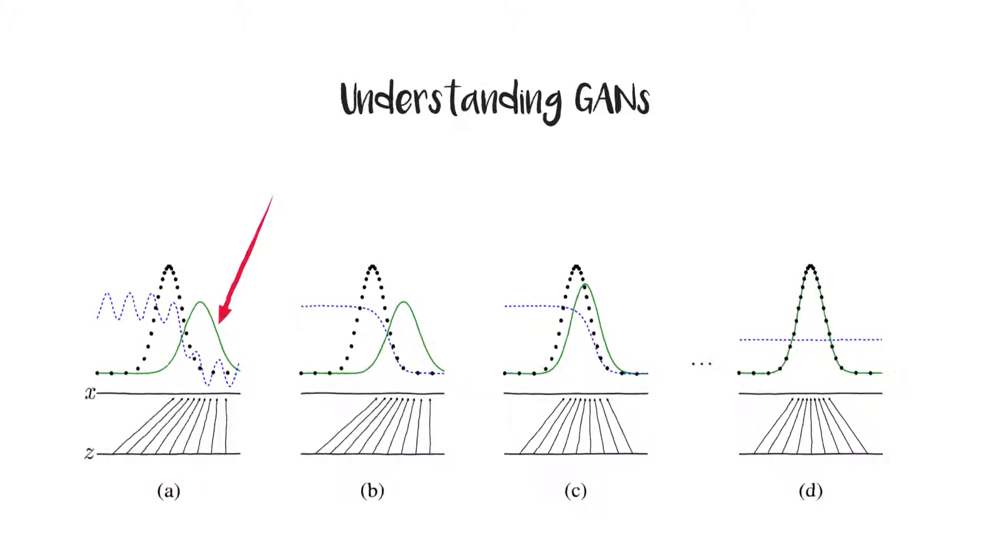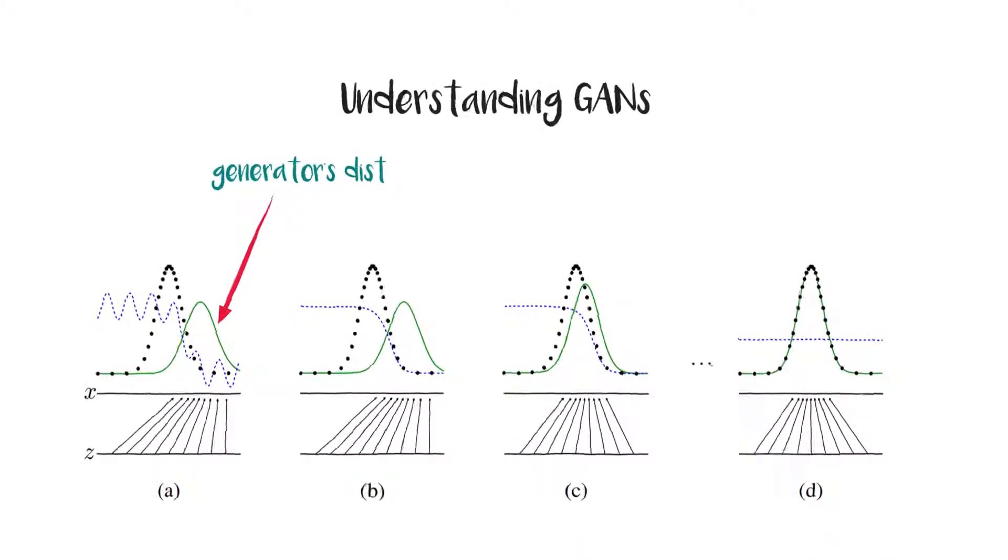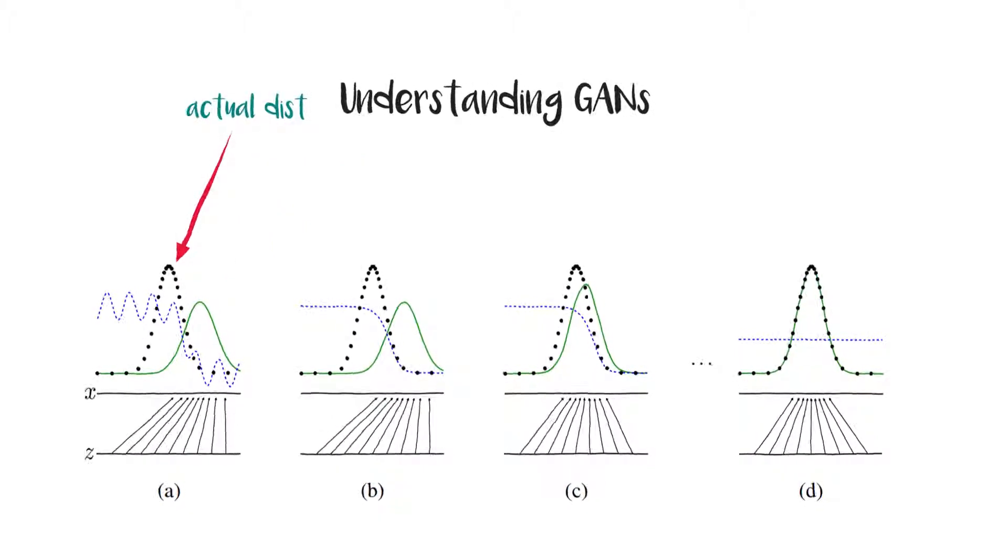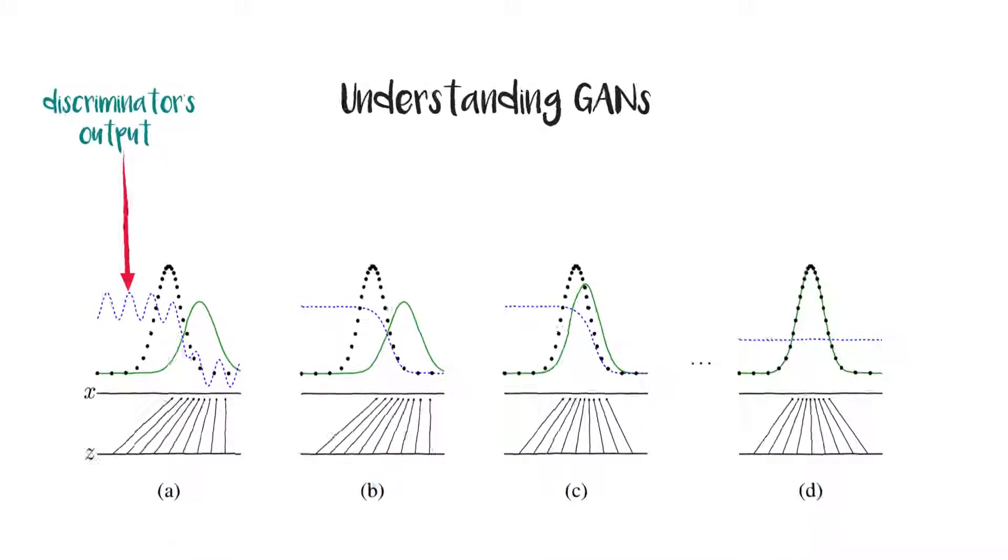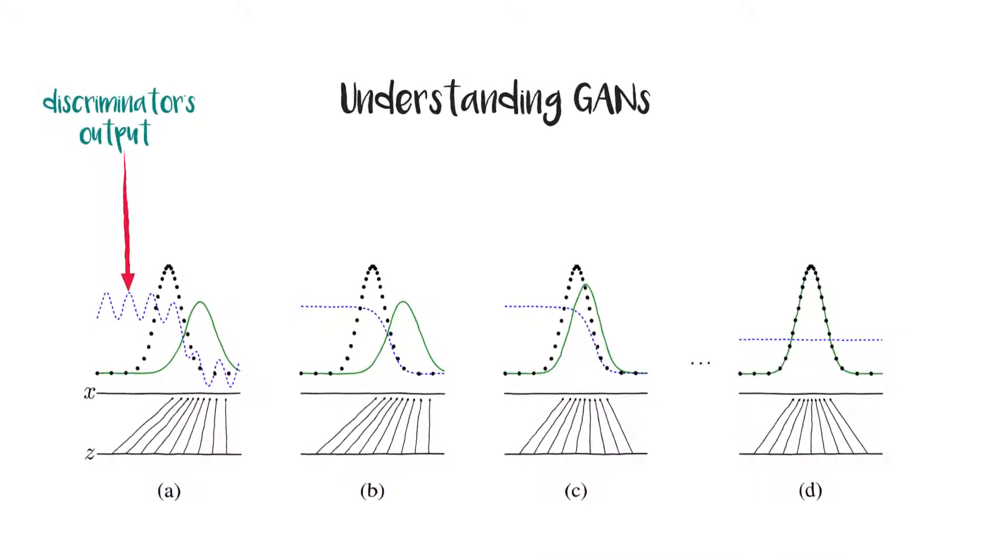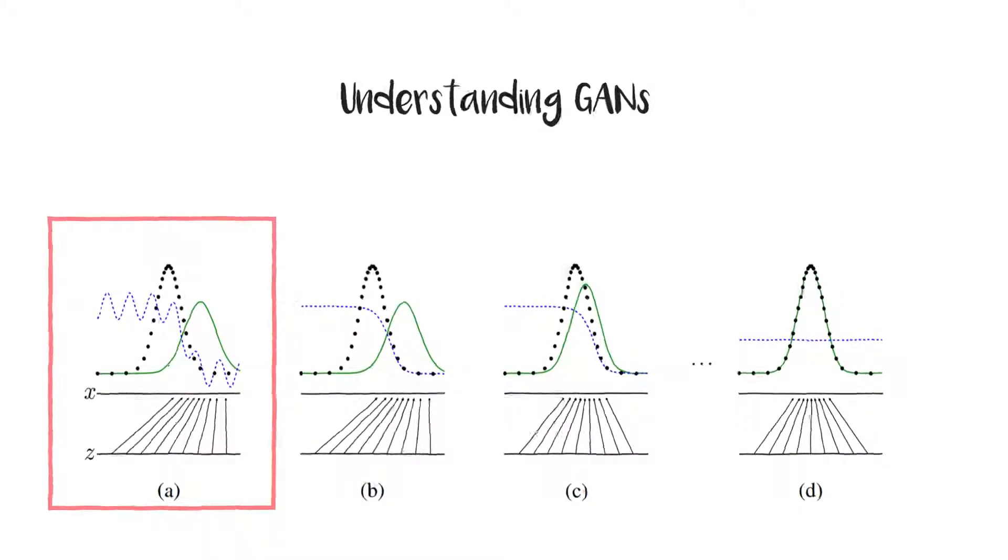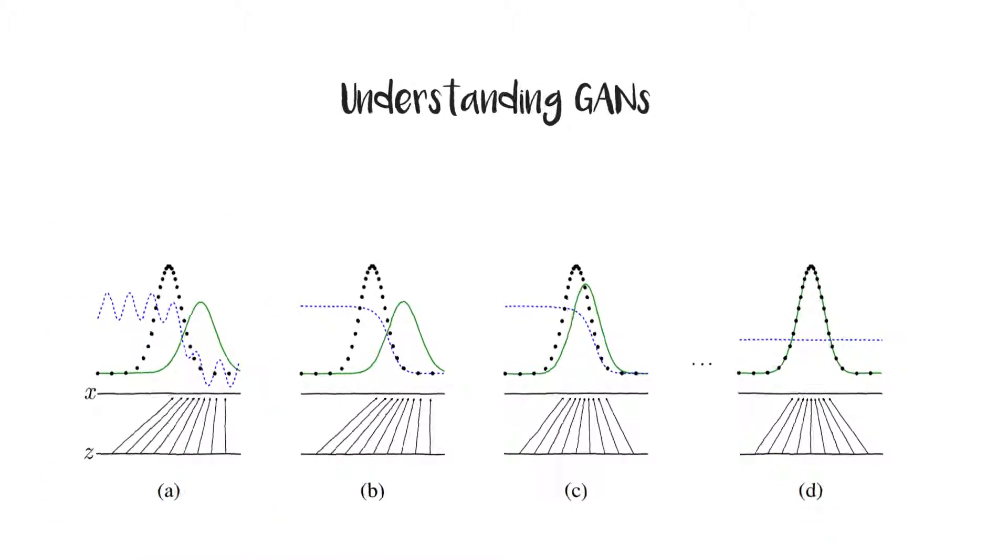In this diagram, the green line shows the distribution learned by the generator. The dotted black line is the actual probability distribution of samples. The blue line is the discriminative distribution for each value in domain x. In the first subfigure, there's a mismatch between the generator's distribution and the actual data's distribution, so the blue line is able to differentiate both.